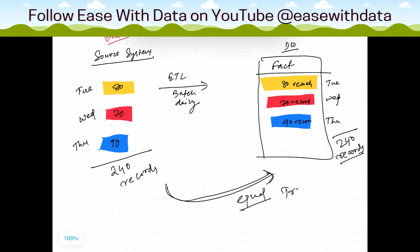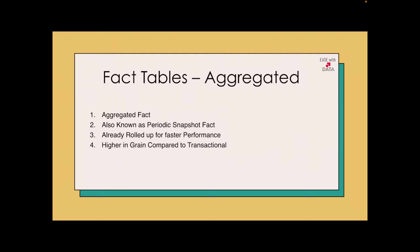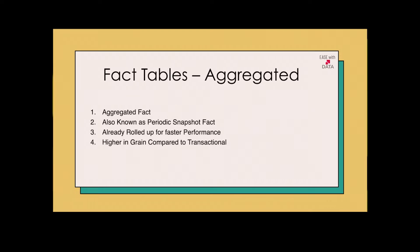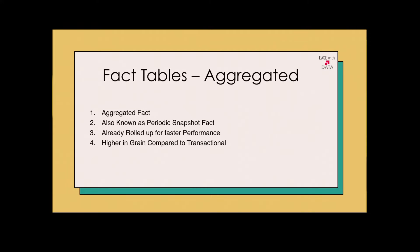This is why it is called transactional — because it loads the data at the very transaction level, how it is captured at the source side. Now let's talk about aggregated fact. An aggregated fact table, or a periodic snapshot fact table, is usually at a higher grain than transactional fact. It accumulates a period of data and keeps that data in the fact table, and is actually smaller in size than the transactional fact table.